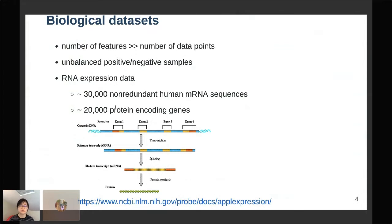One huge difference is that biological datasets usually have a lot more features than number of data points. It's very difficult to collect samples, especially human samples, and it's even more difficult to collect cases compared to controls.